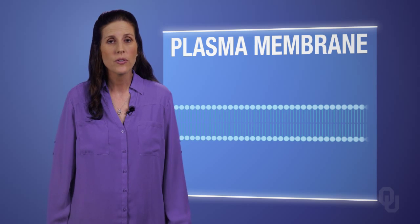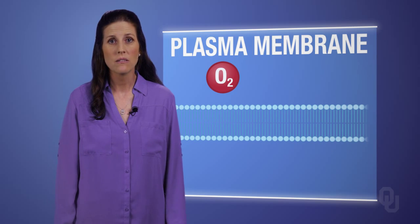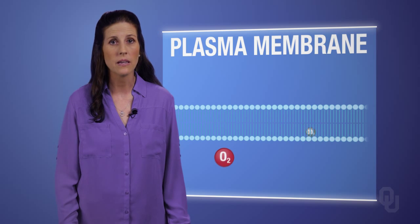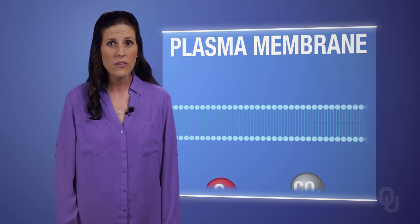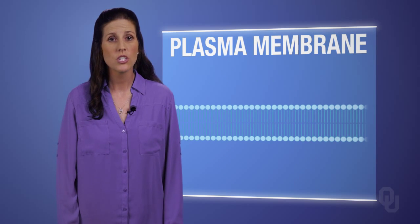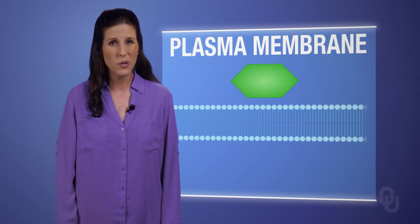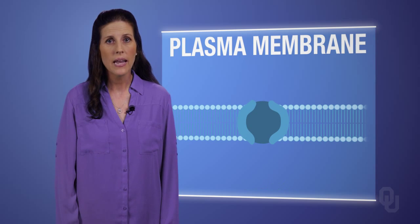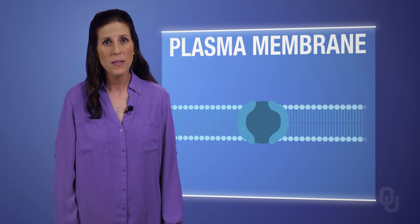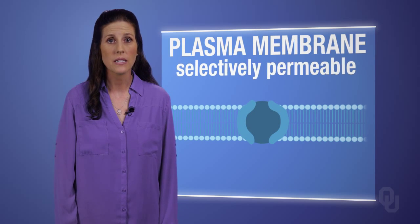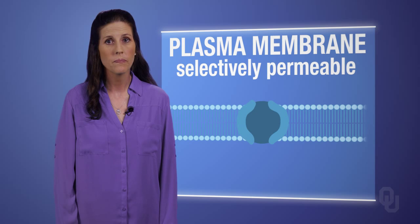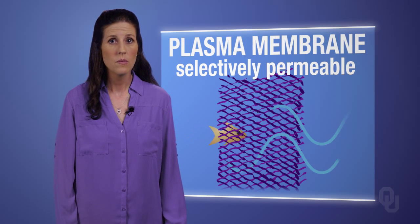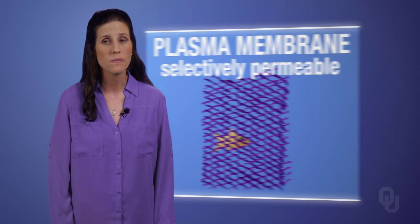Some solutes, such as oxygen and carbon dioxide, pass through the membrane very easily. But other solutes, such as sugars, require specialized membrane proteins. In other words, the plasma membrane is selectively permeable — much like a fishing net allows water to pass through, but not the fish.